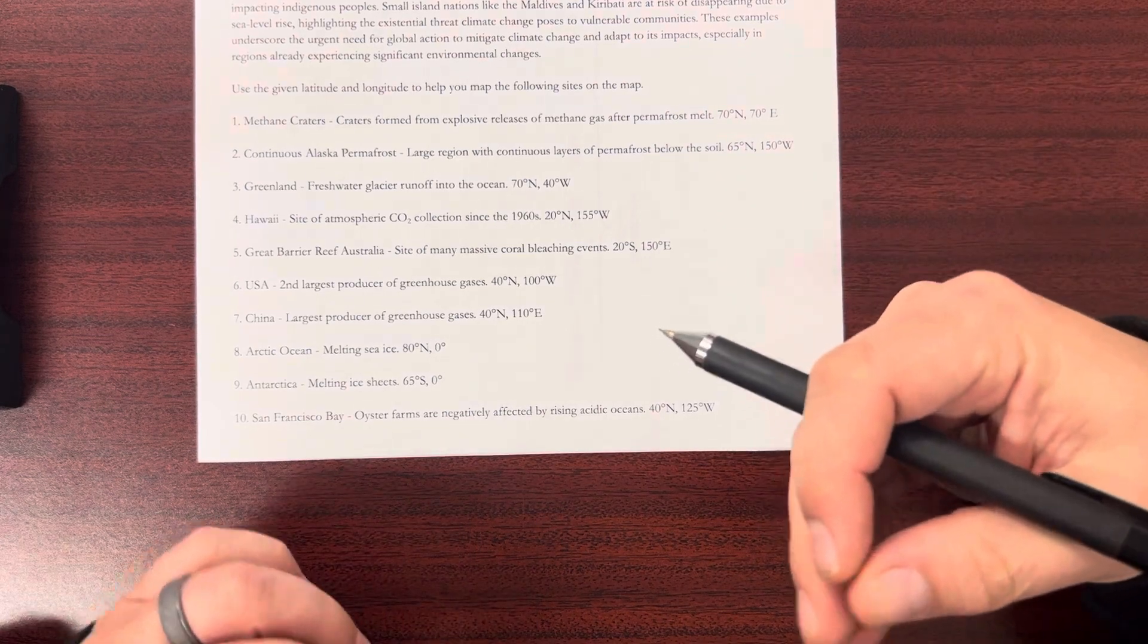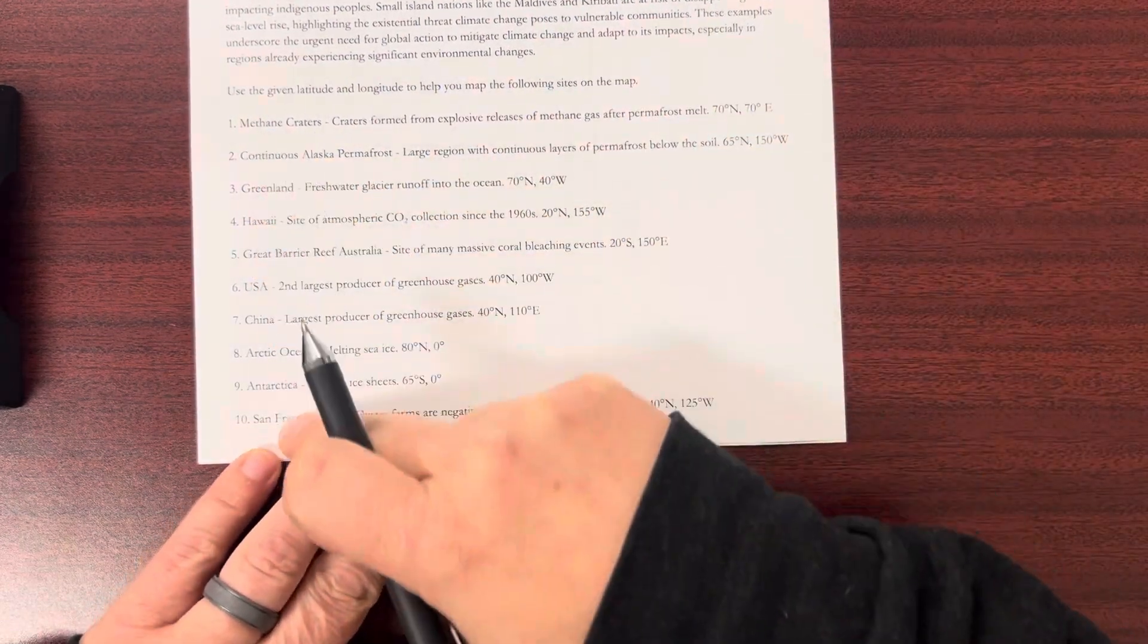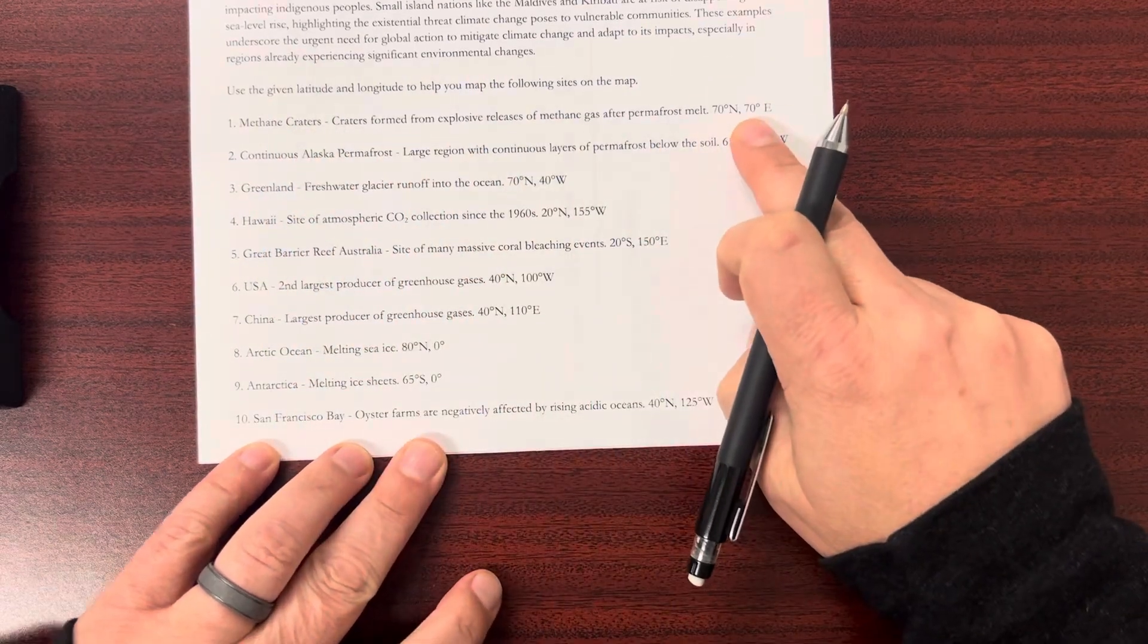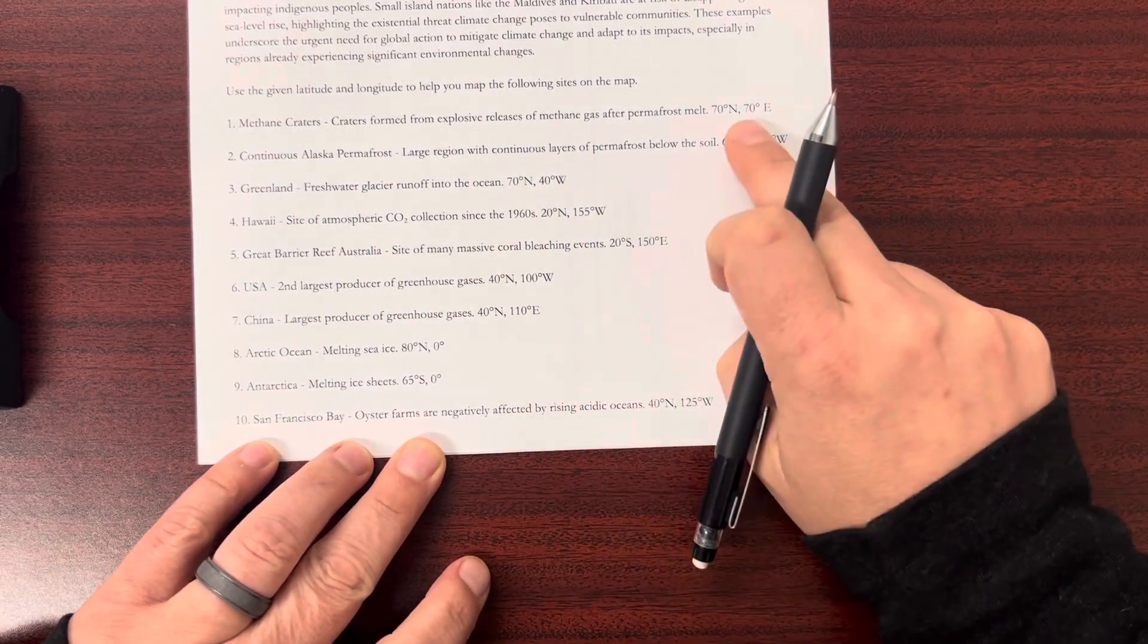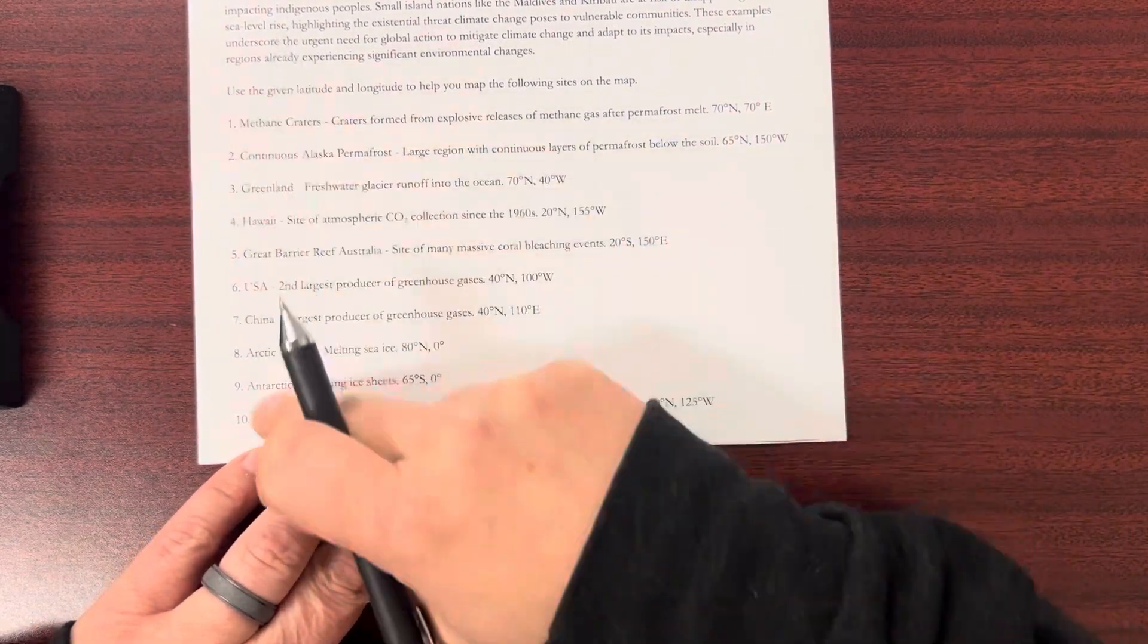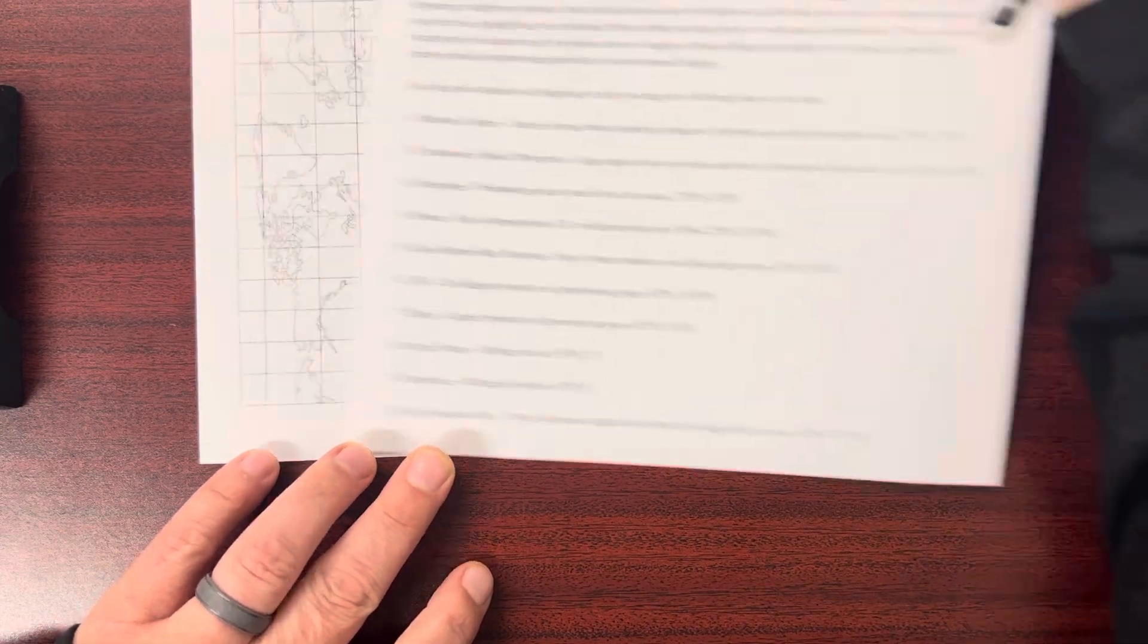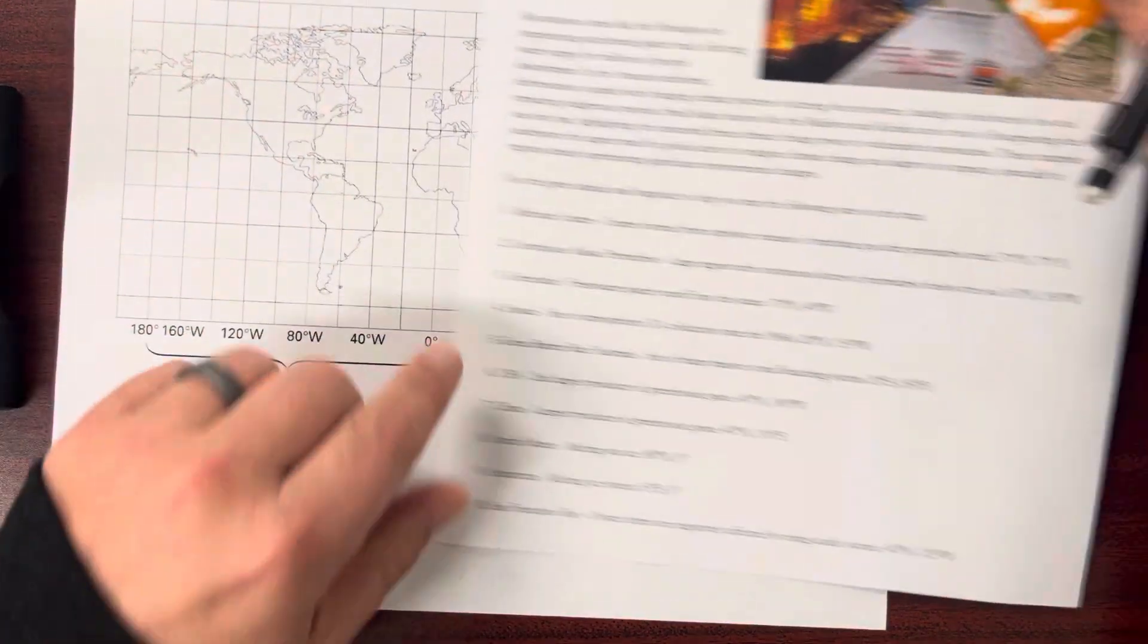Some are where we've collected data, some are where things have occurred because of climate change. What you're going to do - you'll see that each one of these has a latitude and longitude location. We're going to graph the latitude and longitude on a map and then say what it was that we are writing in there. So let's look at the map and we'll look at the first one.